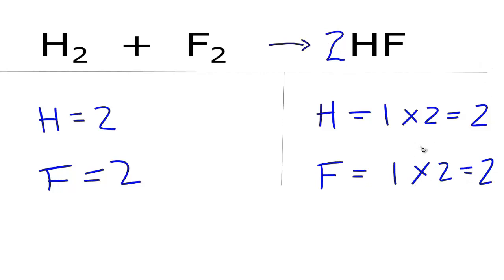And that works out great because we have two hydrogens on both sides and two fluorines on both sides. And this equation is balanced. If you're asked to report the coefficients, you could say 1H2 plus 1F2 yields 2HF.